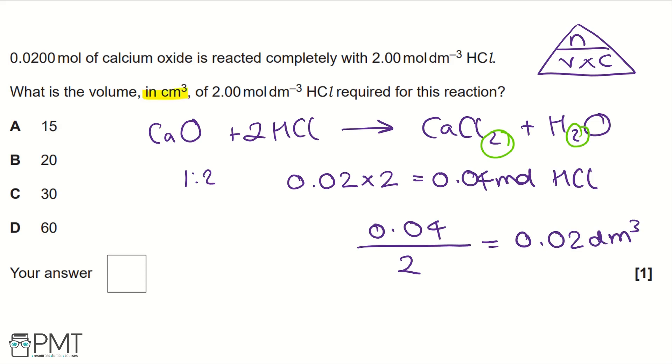The question is asking for centimetres cubed so we need to times by 1000 and that gives us 20 centimetres cubed. Therefore our answer is B. To get the mark for this question you need to write B in the answer box.